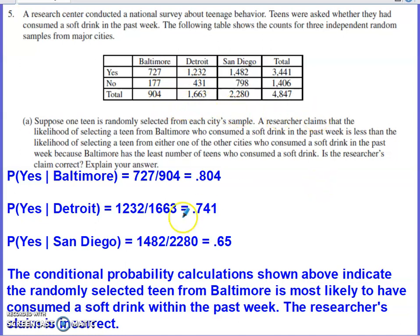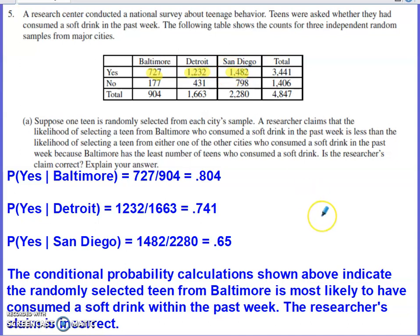In Part A, suppose one teen is randomly selected from each city sample. A researcher claims that the likelihood of selecting a teen from Baltimore who consumed a soft drink in the past week is less than the likelihood from either of the other cities, because Baltimore has the least number of teens who consumed a soft drink. The number from Baltimore answering yes is smaller, but look at the total number sampled from Baltimore — it is by far the smallest. So what makes sense here is to do some conditional probability calculations.